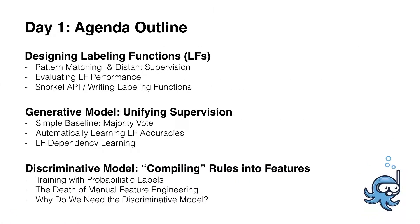To give you an idea of today's agenda, we'll begin by introducing labeling functions. These are sort of the heart of using Snorkel. We'll discuss certain types of labeling functions, how we can evaluate their performance, and how we interact with the Snorkel API to do all of this. Then we'll move into the generative model, which is the way in which we unify the supervision provided by labeling functions to actually generate programmatically large-scale training data sets.